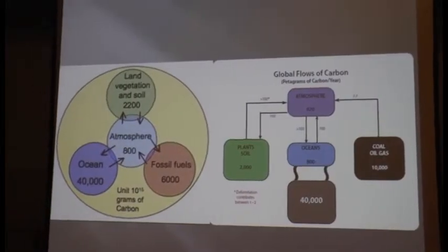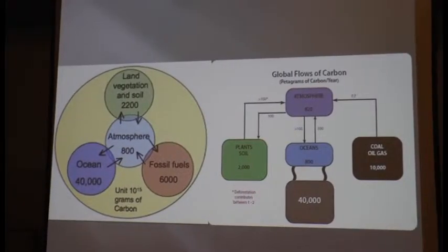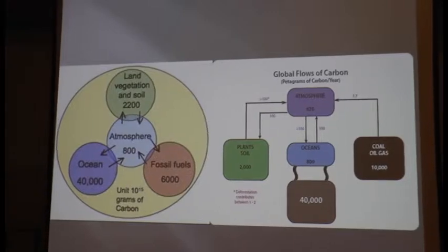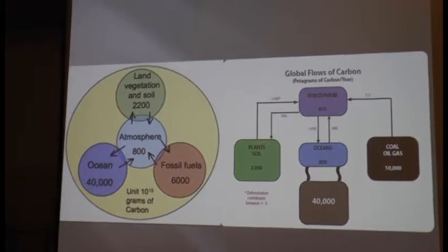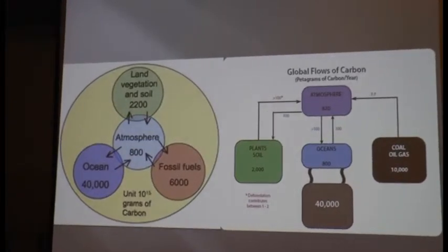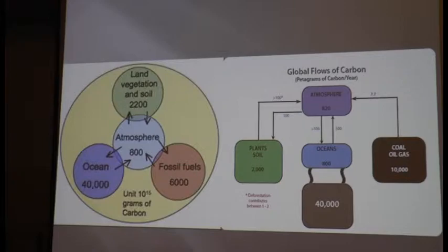The next slide shows the cyclic and semi-cyclic flows of carbon. We'll begin to look at specifically the ones we do impact as agricultural producers. This gives you an idea of what we're looking at — the pentagrams of carbon. Put all the zeros on the end and you can get the answer to that one.